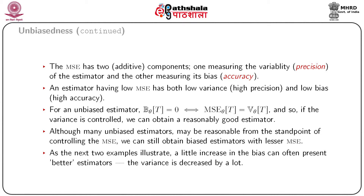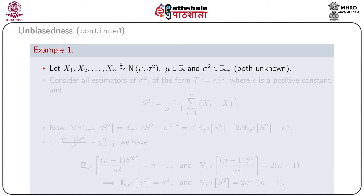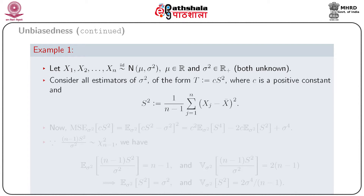We shall now consider some examples where the MSE of a biased estimator is smaller than that of an unbiased estimator. In the first example, suppose x₁, x₂, …, xₙ are iid Normal(μ, σ²) random variables where μ and σ² are unknown. Consider all estimators of σ² of the form T = c · S², where c > 0 and S² = (1/(n−1)) Σᵢ(xᵢ − X̄)², with X̄ = (1/n) Σᵢ xᵢ.